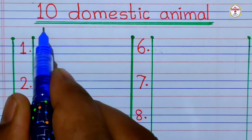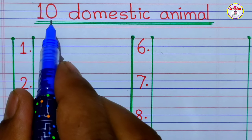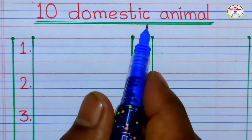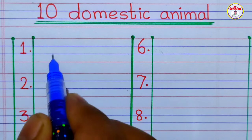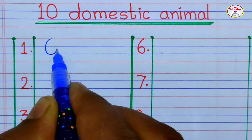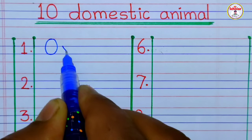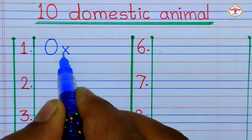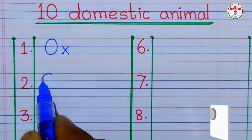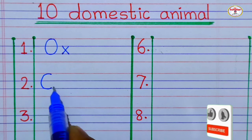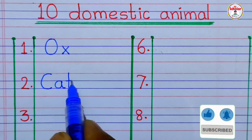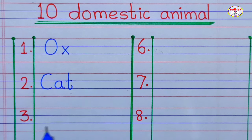Hello friends, welcome to our scholar channel. Today we learn and write 10 domestic animals. First animal name is ox — o, x — ox. Second animal: c, a, t — cat.